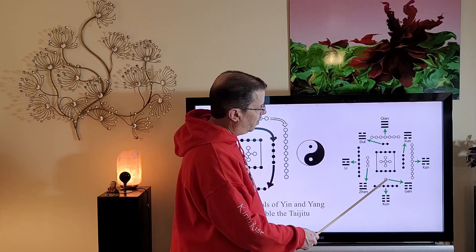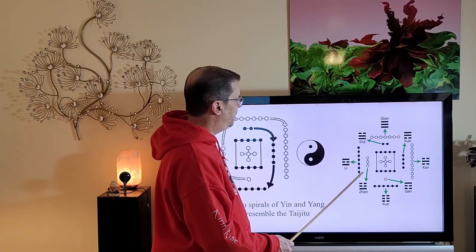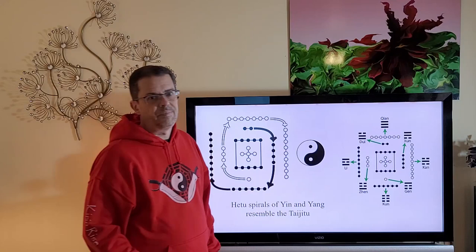So starting in the corners, we have one, two, three in this corner, and four. Five is in the center with no symbol associated but the Yin Yang symbol. Six, seven, eight, and nine.